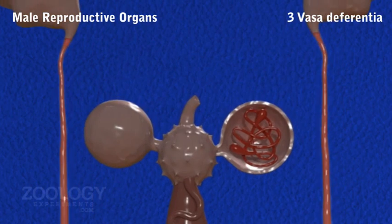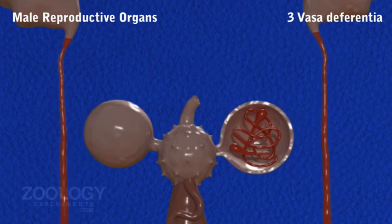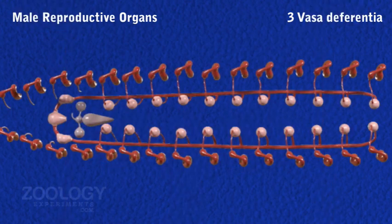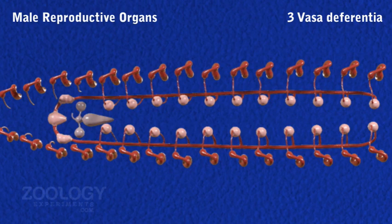Vasa deferentia: Vasa deferentia is a slender, longitudinal, wavy duct lying on the ventral body wall parallel to the nerve cord, extending forward from the 22nd to the 11th segment.